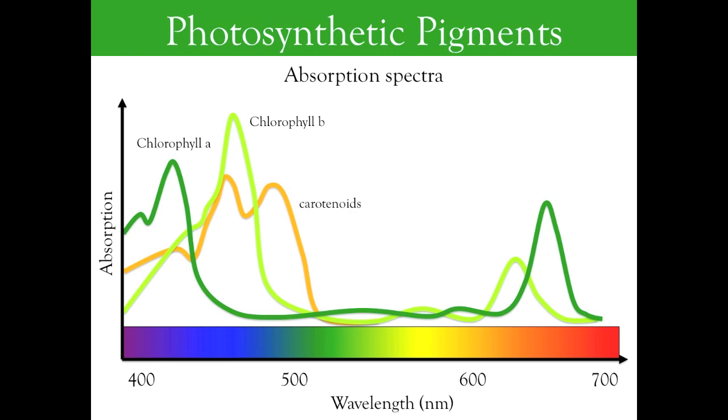Photosynthetic organisms, such as trees, have specific pigments that absorb light in the visible range. By absorbing the light, they make its energy available for photosynthesis. The most important of all photosynthetic pigments is chlorophyll. This pigment gives leaves their green color by absorbing blue and red light while reflecting green light.